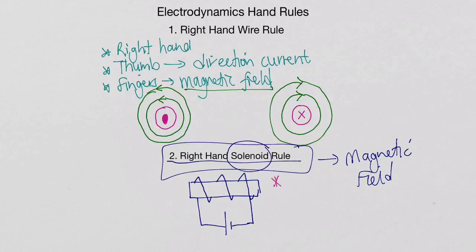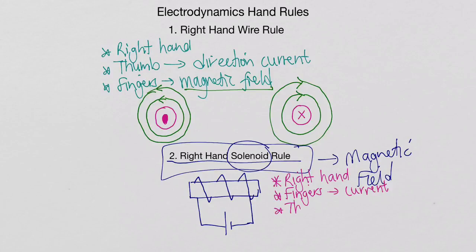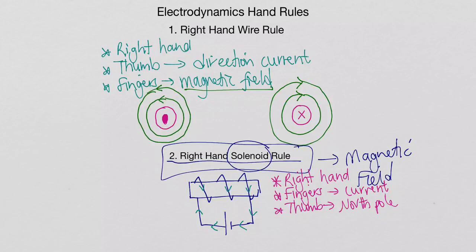Using your right hand only, you grab the solenoid — or imagine grabbing it — with your fingers pointing in the direction of the current on the actual solenoid, not in the external circuit. Your thumb will then point to the north pole of the electromagnet created. Looking at this solenoid with current flowing in that direction, if you grab it with fingers pointing towards you, your thumb points towards the right on the screen. So that side would become the north pole and the opposite side the south pole.